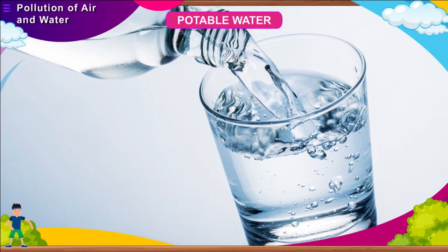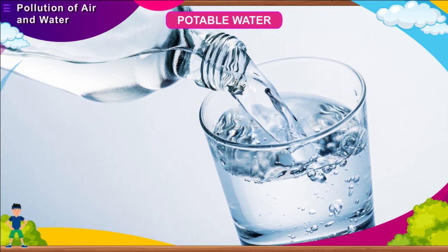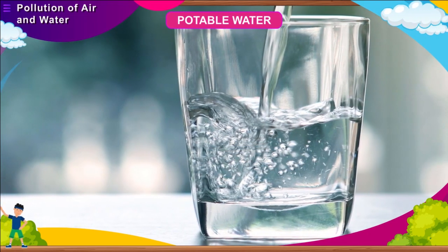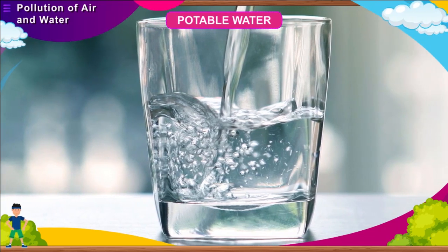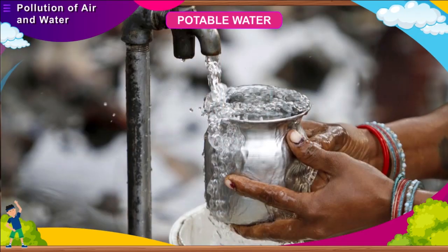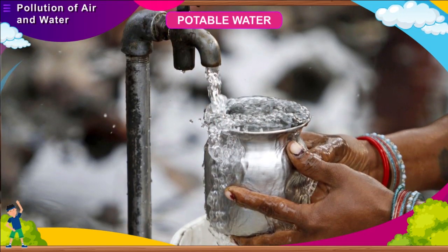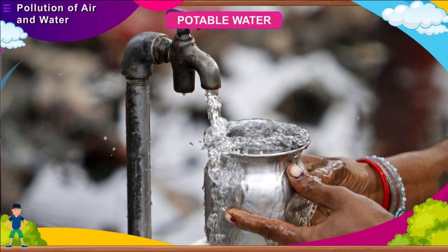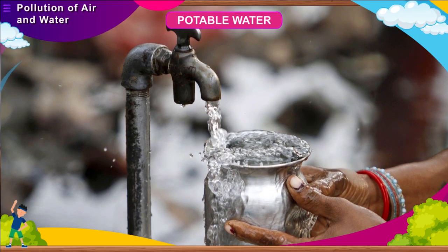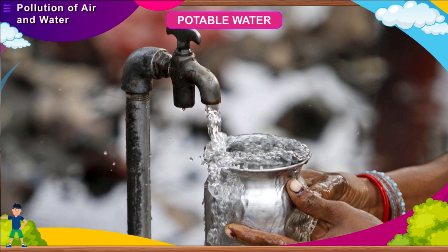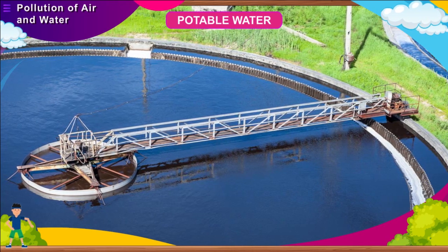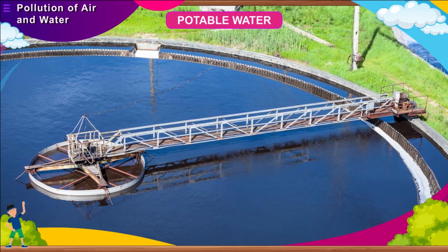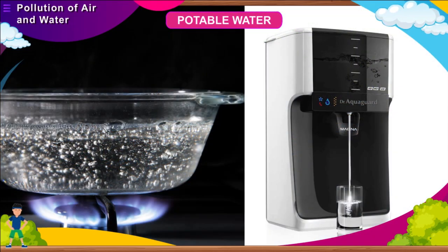Water which is suitable and fit for drinking is said to be potable water. It has a number of minerals which are necessary for the proper functioning of our body and for normal metabolism. Drinking water should be colourless and odourless. It should be free from any suspended impurities, harmful germs and large quantities of salts such as nitrates, cyanides, urea, etc. Water should be treated properly before drinking. Commonly used methods include treatment at water treatment plants, use of filters at home and boiling.